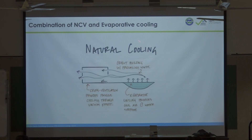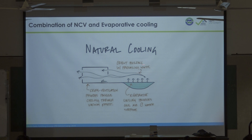A combination of natural cross ventilation and evaporative cooling is possible: if the wind blows from the right, you can use a pond to raise the humidity level, and then the wind enters without creating air friction because the roughness is very low. This allows a combination of natural cross ventilation and evaporative cooling.